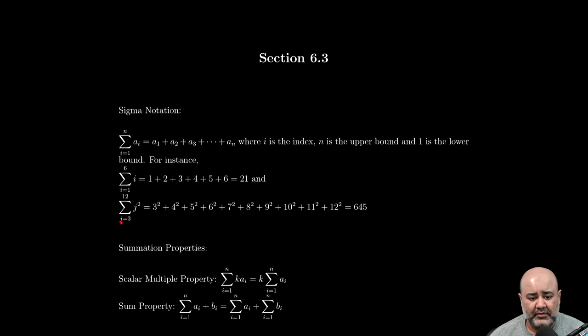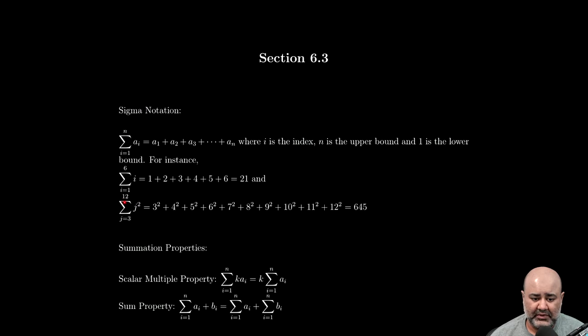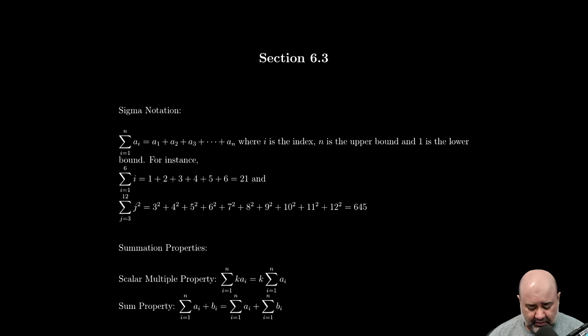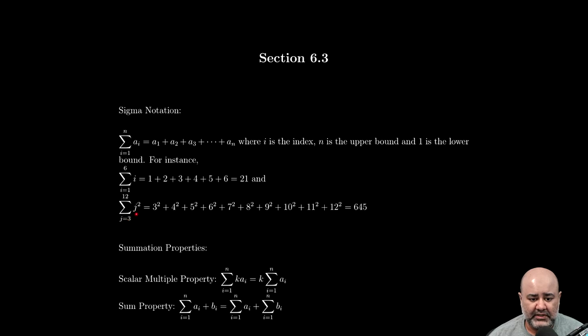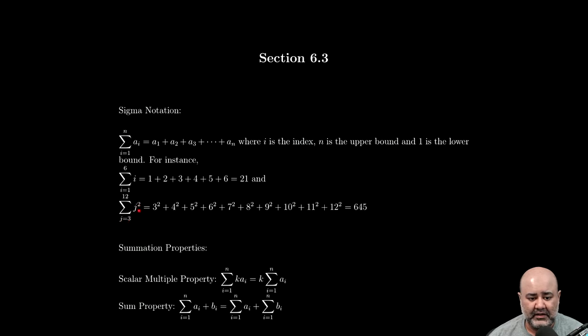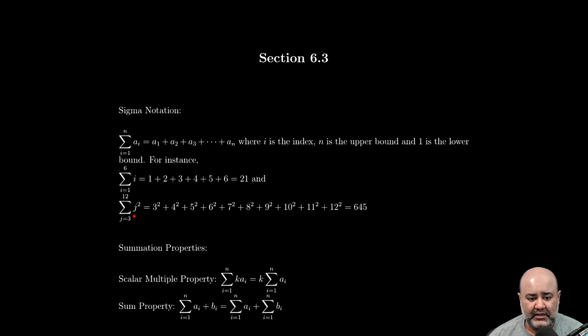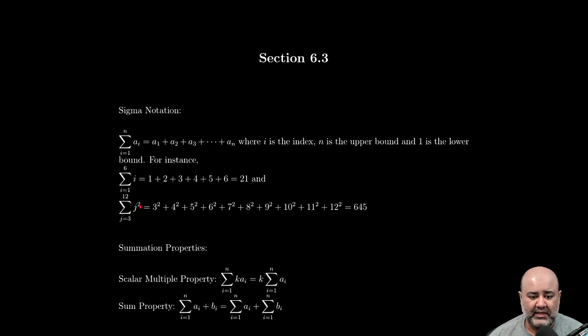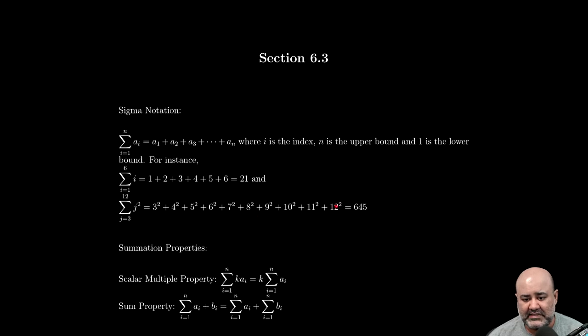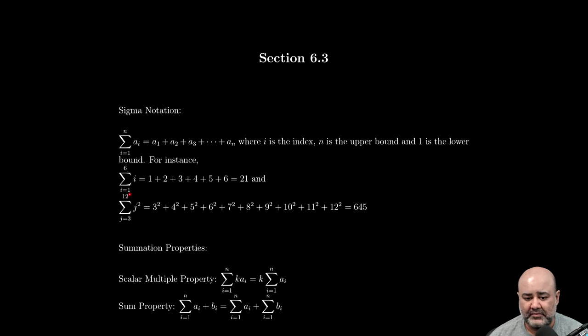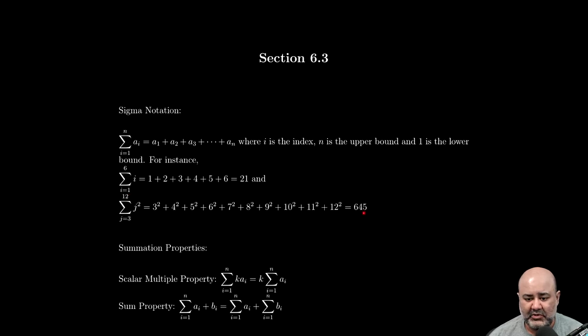Another example: if we have an index from j equals three to j equals twelve, and the formula is j squared, that means whatever this number is you square it before you can put it on the other side. So you start with 3² plus 4² plus 5² plus 6² plus 7² plus 8² plus 9² plus 10² plus 11² plus 12². Add these up and you get 645.